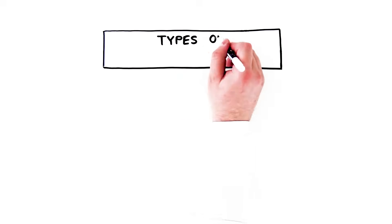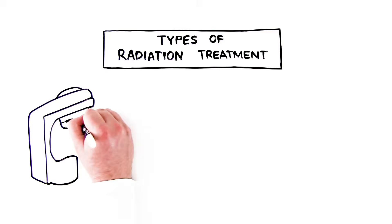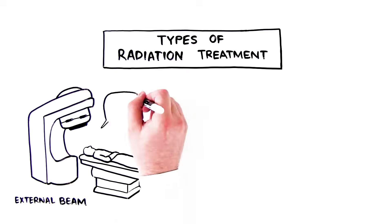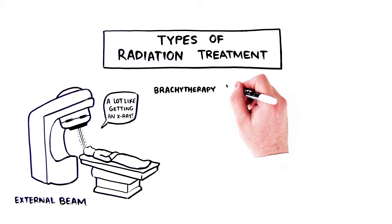There are different types of radiation treatment. The most common is external beam radiation. This is a lot like getting an x-ray. A machine is used to aim the radiation beam right where the tumor is.